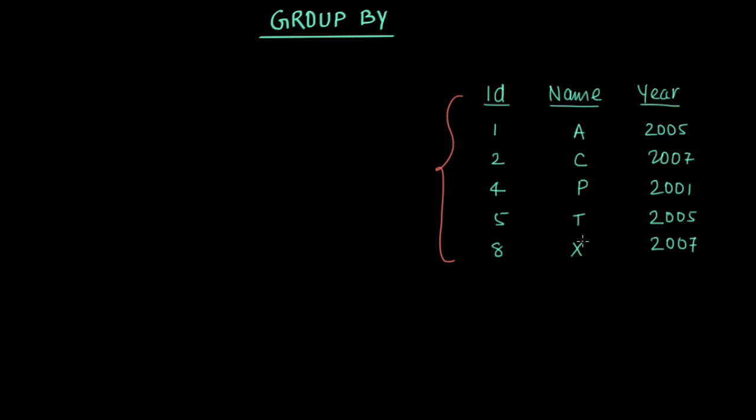Now let's say there is a case that I want to display this data where I want to group this data by year. It means what I want is I want to display this 2005 and 2005 together, whereas this 2007 and this 2007 together, and this 2001 separately.